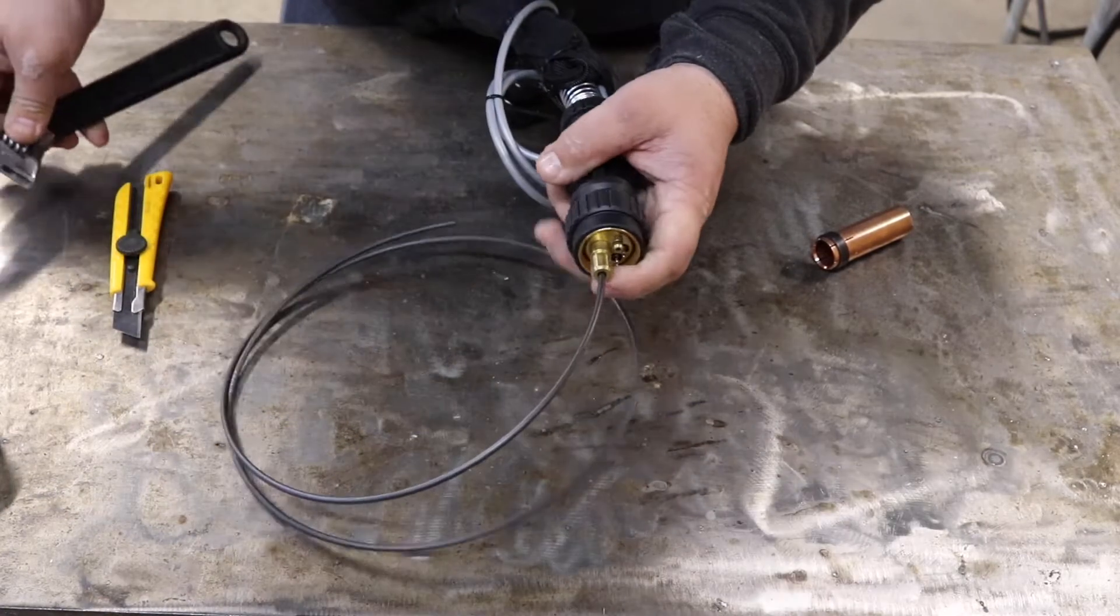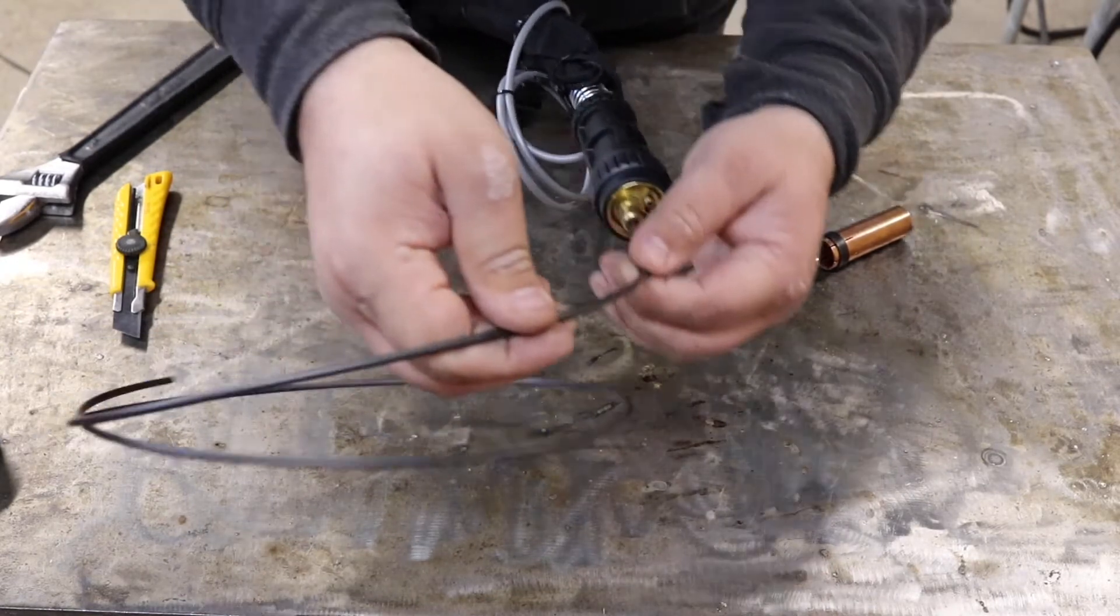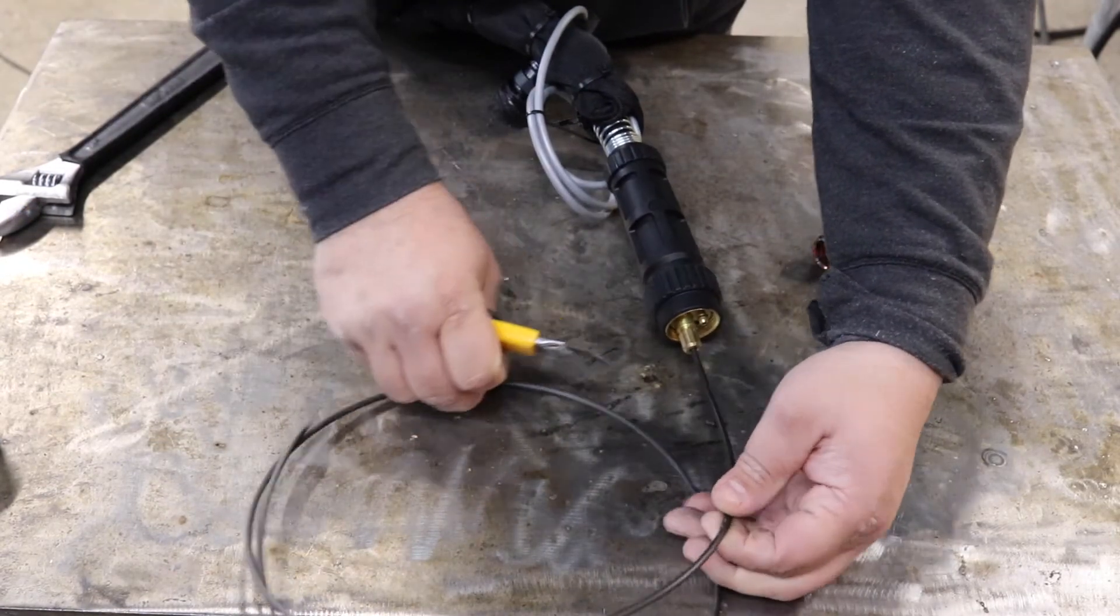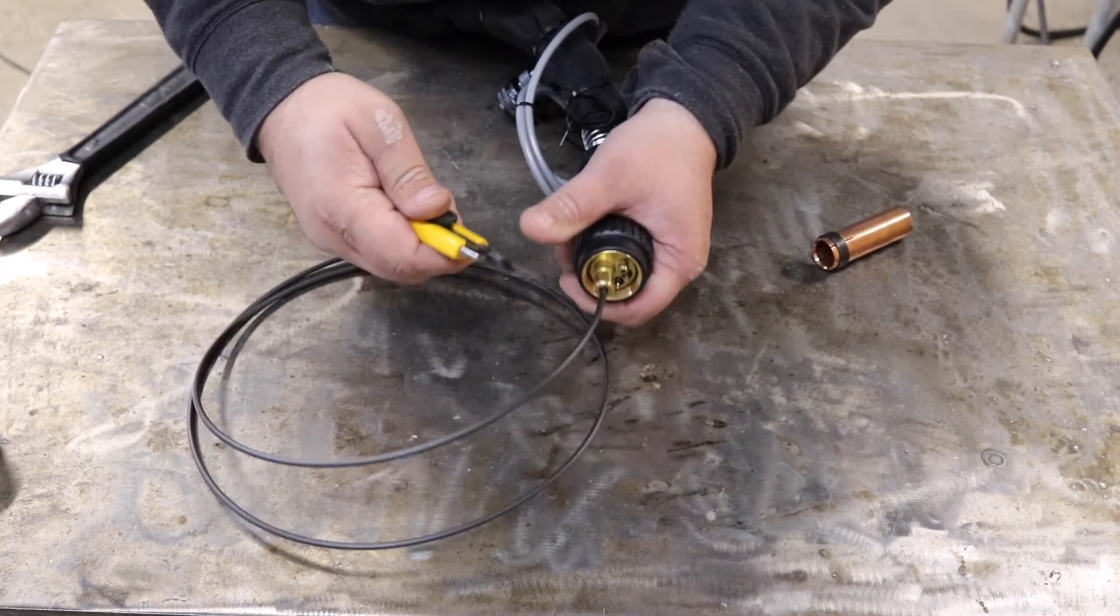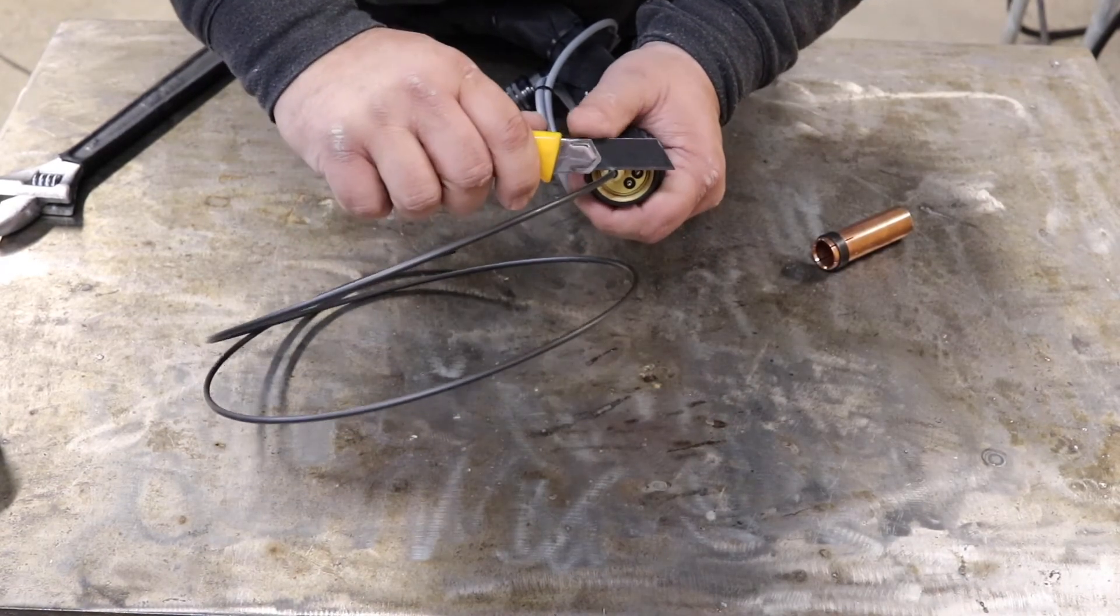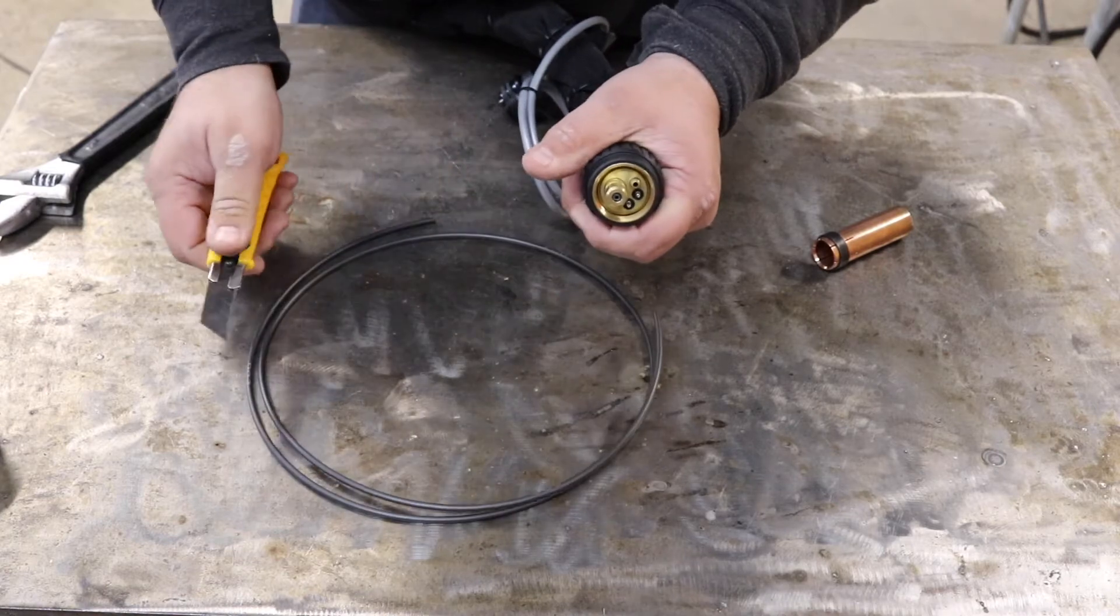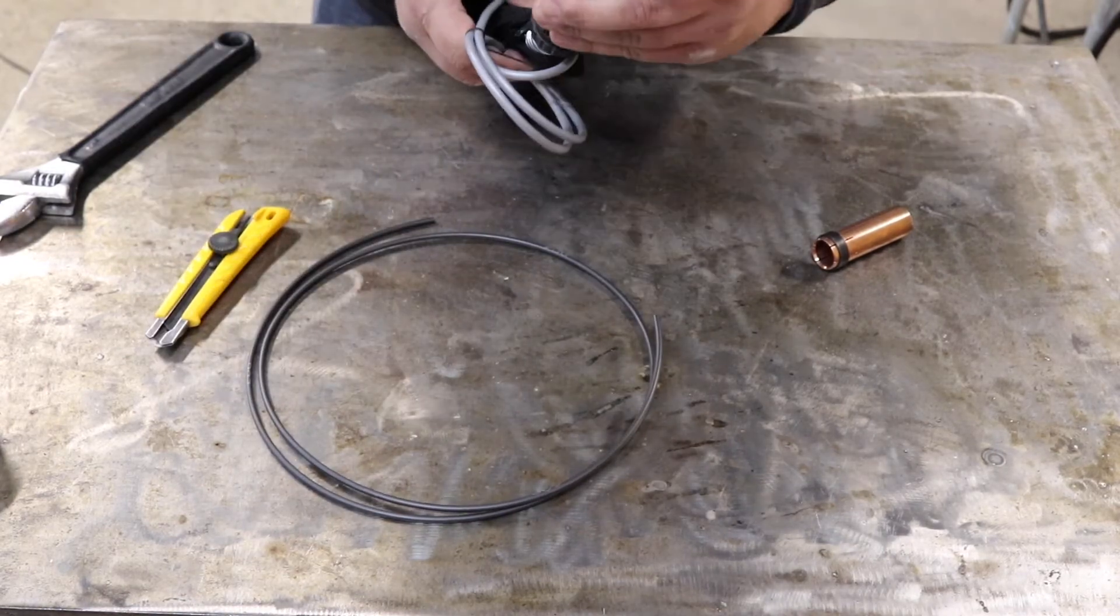And then if your machine has the guide tube removed, you need to leave the liner long and go up all the way to the drive roll. If your machine has the guide tube installed, you can just take a sharp knife, cut the liner flush, and your new carbon graphite liner is installed.